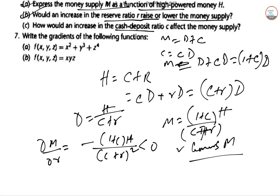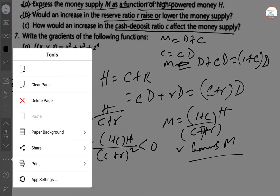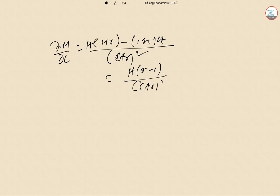Next, how would an increase in the cash-deposit ratio affect the money supply? So this one will be dM/dC. So H into (C plus R) denominator, (1 plus C) into H, denominator squared, (C plus R) squared. So H into (R minus 1) and (C plus R) squared. This is negative, so increase in C also lowers M. So C rises, M falls.